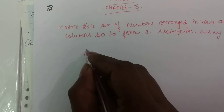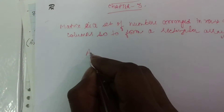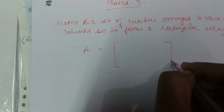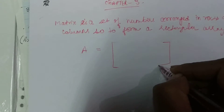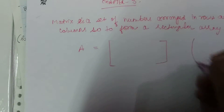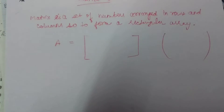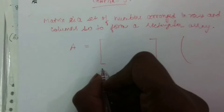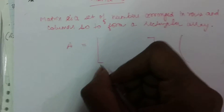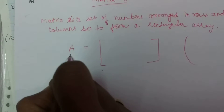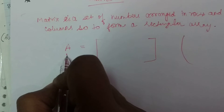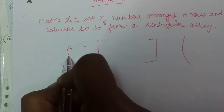Matrix is a rectangular representation of numbers and it is represented by capital letters. It is written in these square brackets — mainly hum yeh wala bracket use karte hain matrix ke liye. Jab bhi apne matrix ko represent karenge, capital letters se represent karenge.